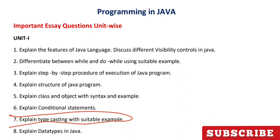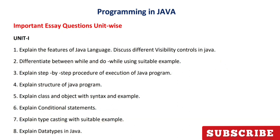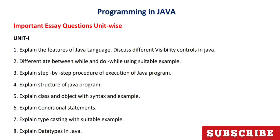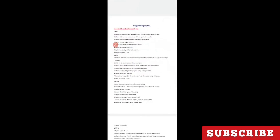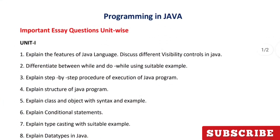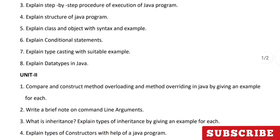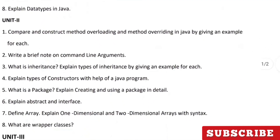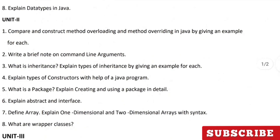The eighth question from unit one is data types in Java — what data types are available in Java, how much memory each takes, and how you use them. Now moving to unit two, which also consists of eight questions.